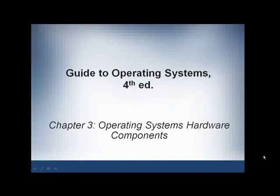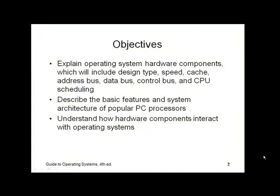Welcome to Guide to Operating Systems, 4th Edition. This is Chapter 3: Operating Systems Hardware Components. In today's lecture, we're going to explain the operating system hardware components. This is going to include the design type, speed, cache, address bus, data bus, and control bus. We're going to talk about CPUs and CPU scheduling, describe the basic features in system architecture of popular PC processors, and understand how hardware components interact with operating systems.